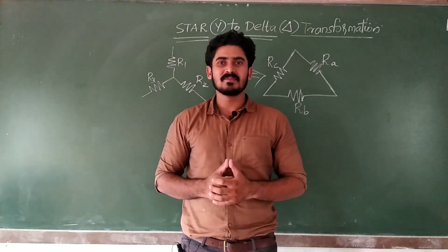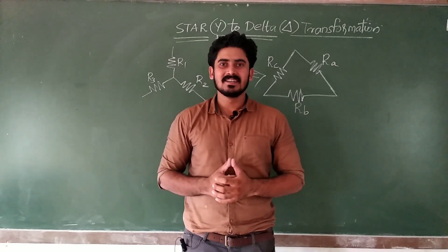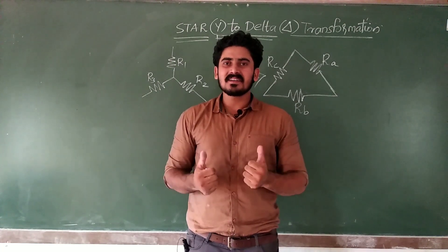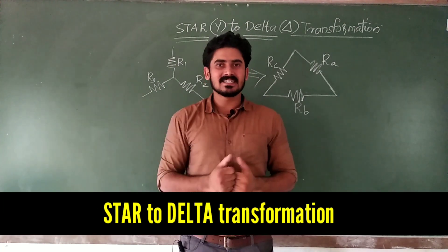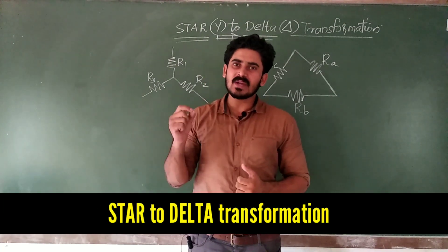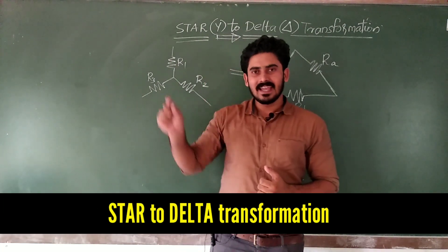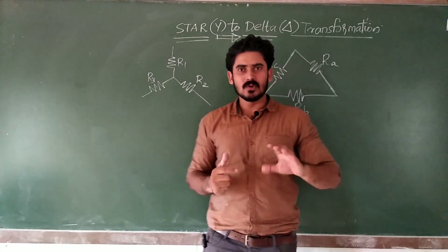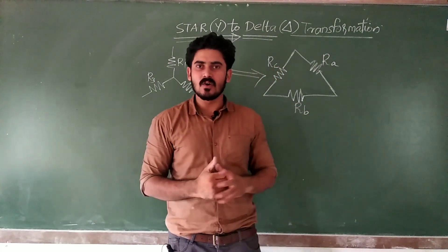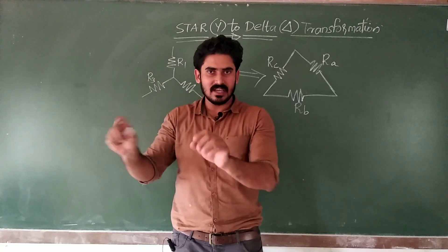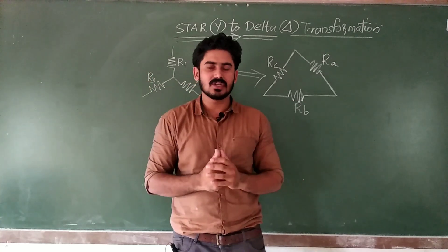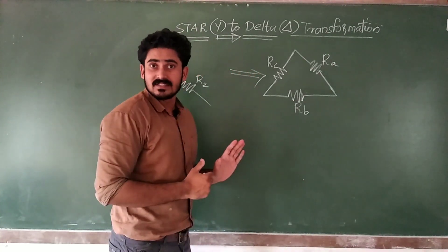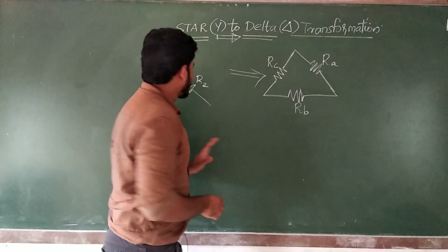Hi, this is the Learn with Renip YouTube channel. Today we have to discuss star to delta transformation — how can you convert a star connected resistors into a delta connected one? That is the question. A star connection into delta connection — so what will be the change in values of resistance here?